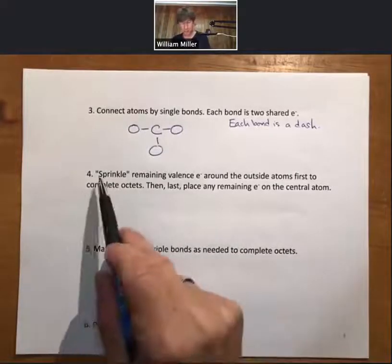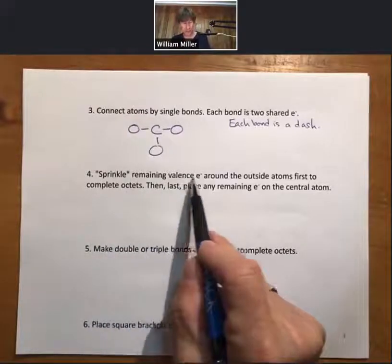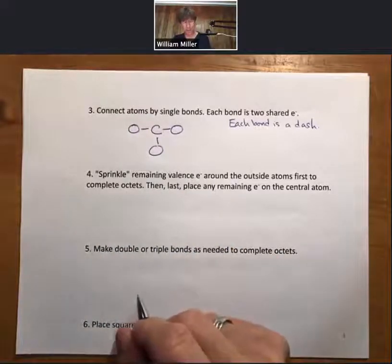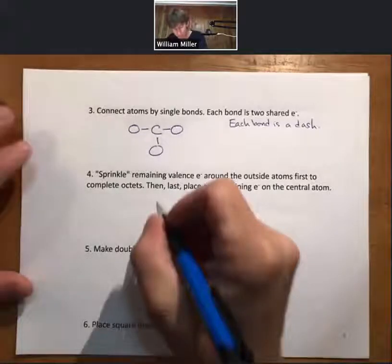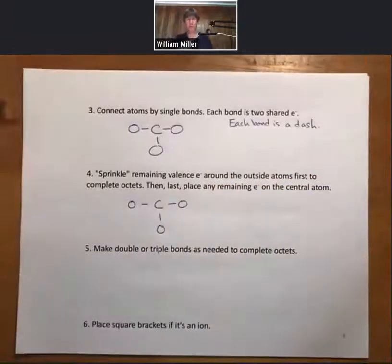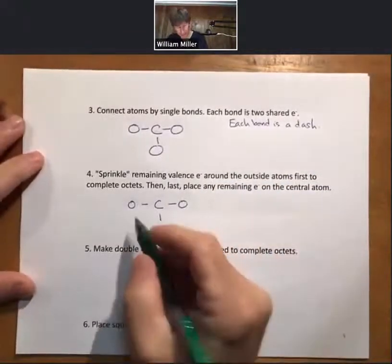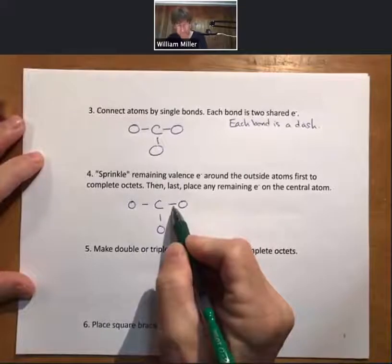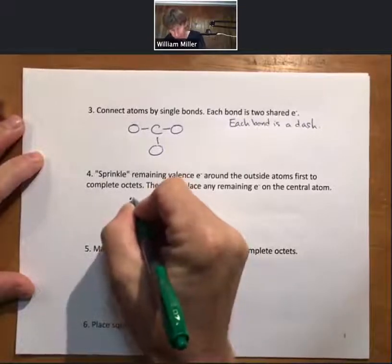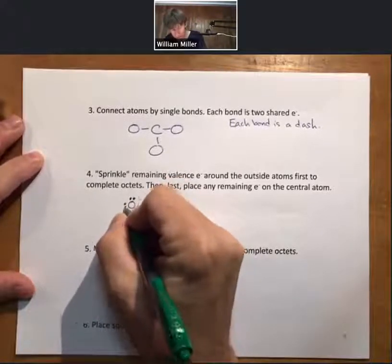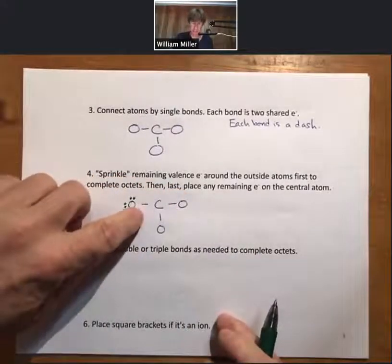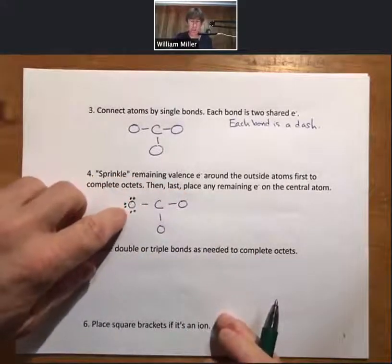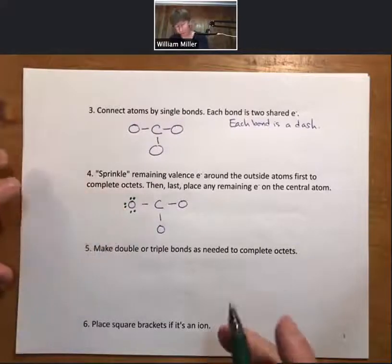So step four says, sprinkle remaining valence electrons around the outside atoms first to complete octets. Well, here's where we were before. Now I have two, four, six. I'm going to do two more for eight, ten, twelve. This oxygen on the left now has an octet. I have a total of 12 electrons in my Lewis structure.